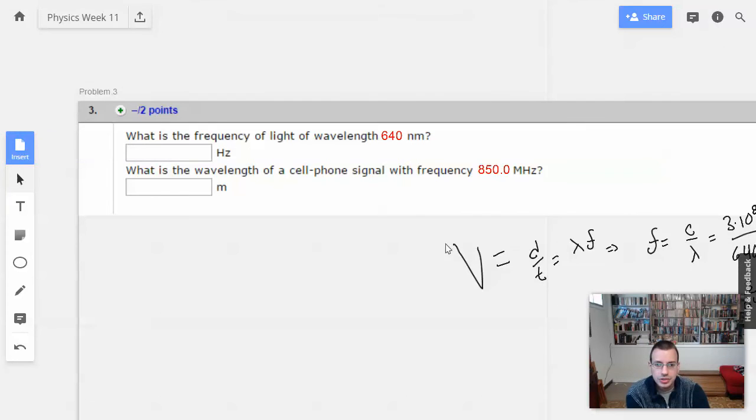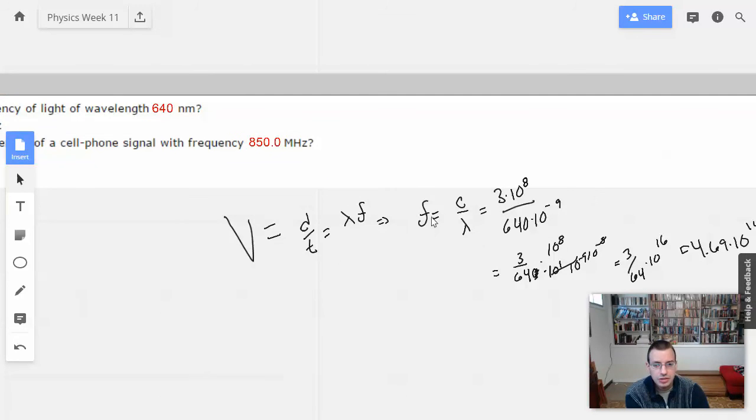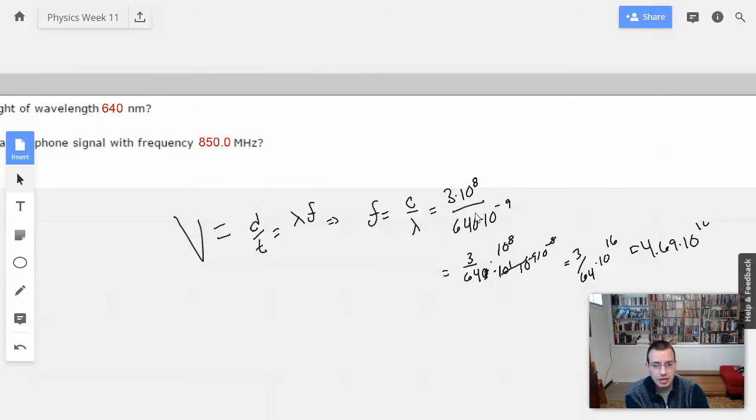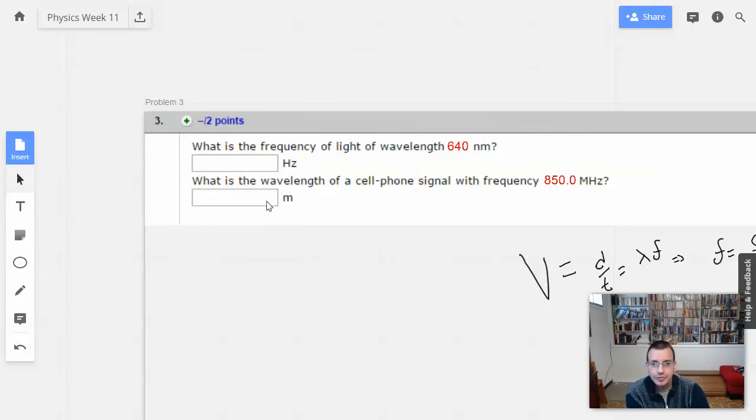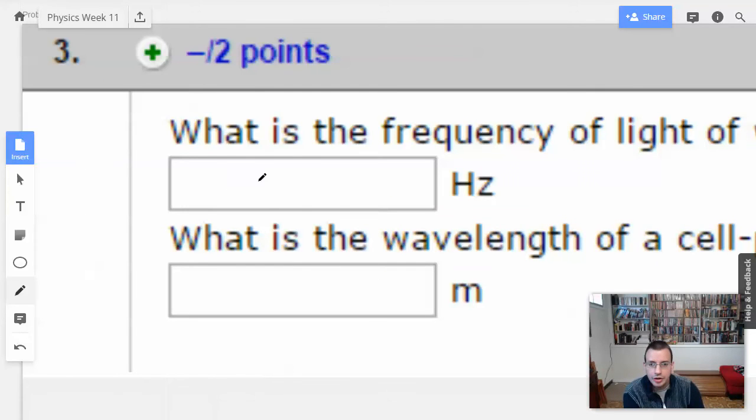Just check the math real quick. So we're looking for frequency, check. And we're given a wavelength, check. So frequency equals speed over wavelength. 3 times 10 to the 8th divided by 640 times 10 to the negative 9th. That seems reasonable. So I'm going to round a little bit more. 4.69 times 10 to the 14th Hertz. Many, many Hertz.